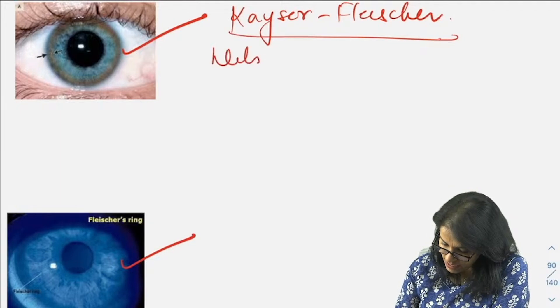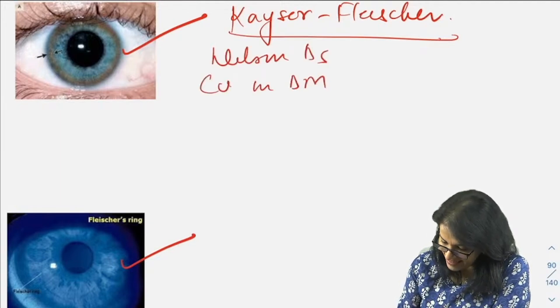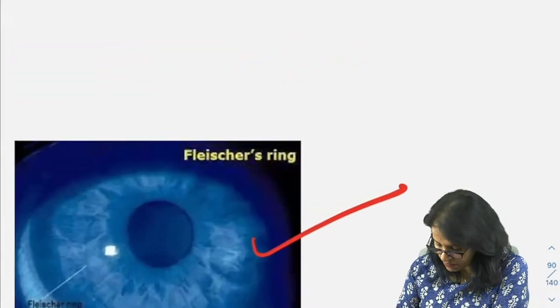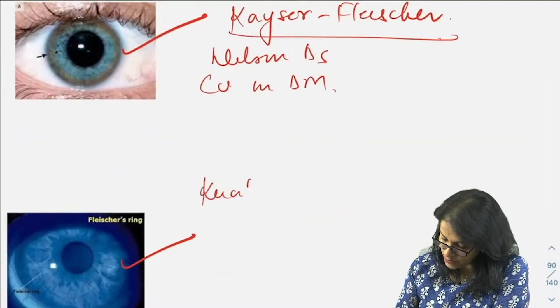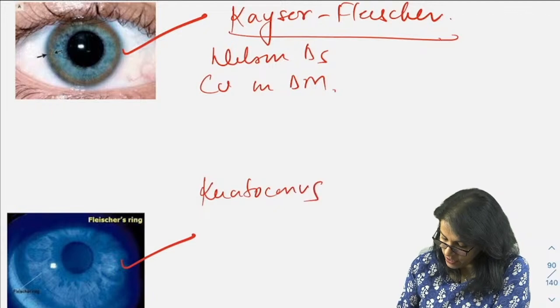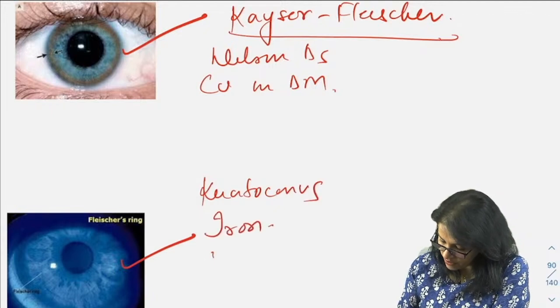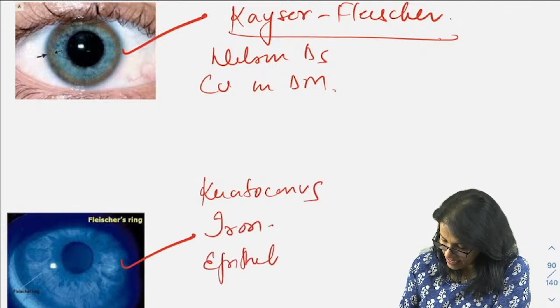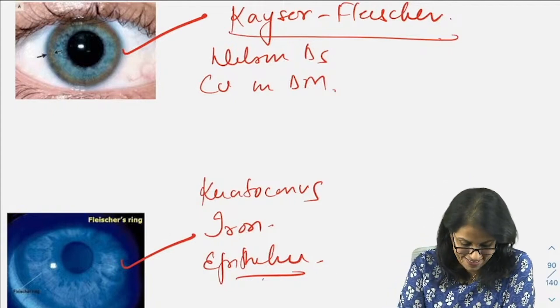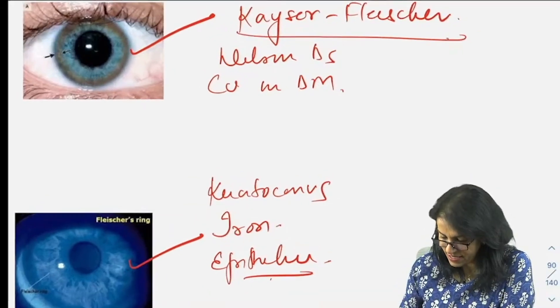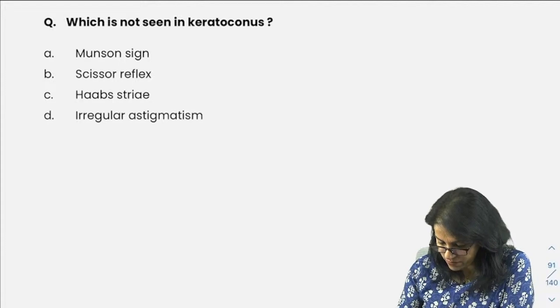When you talk about Fleischer's ring, we are talking about keratoconus, we are talking about iron deposition on the epithelium. Iron is always deposited in the epithelium. Very good. So that was this slide.